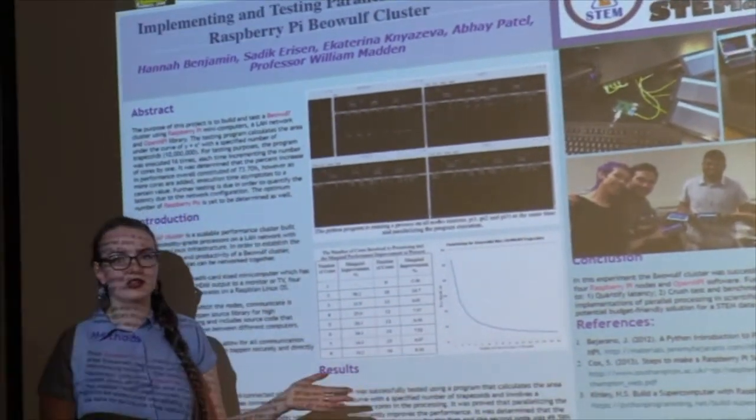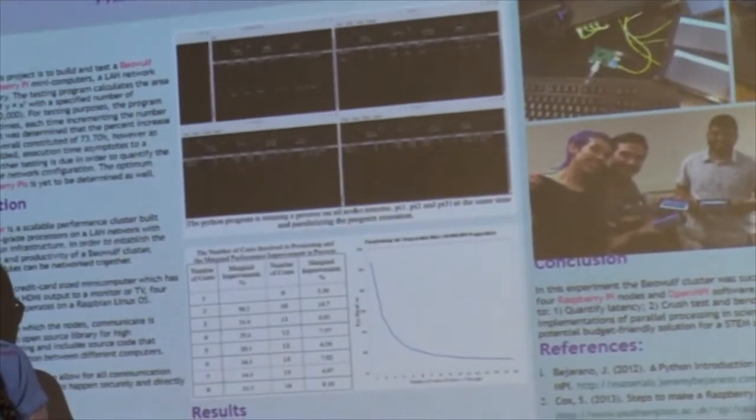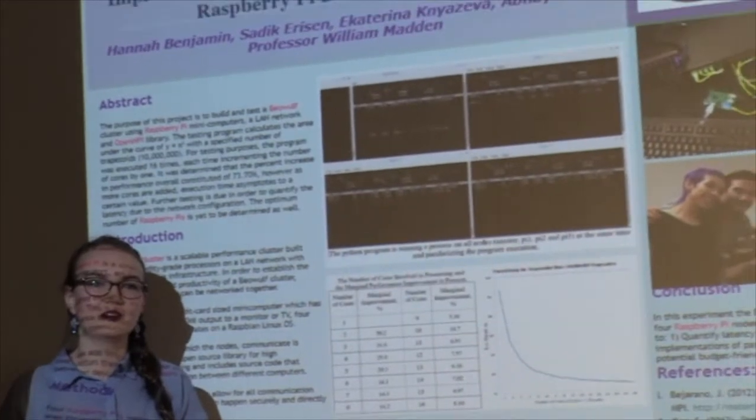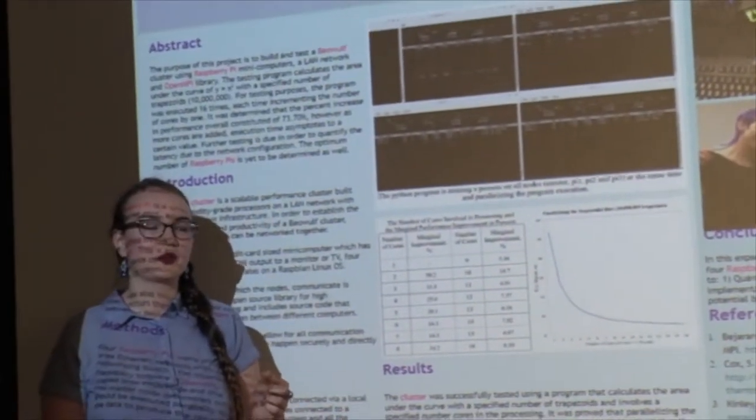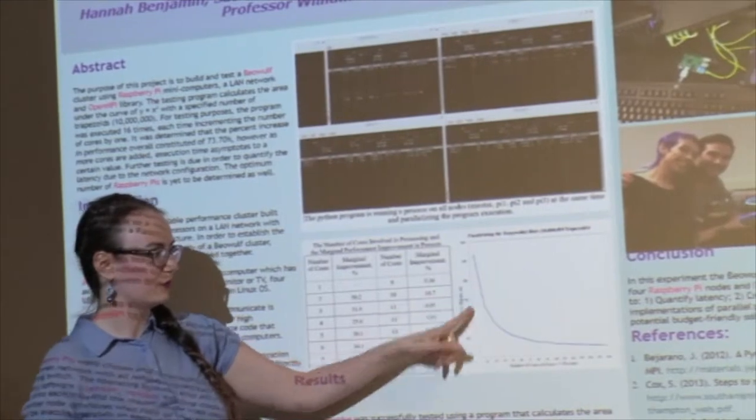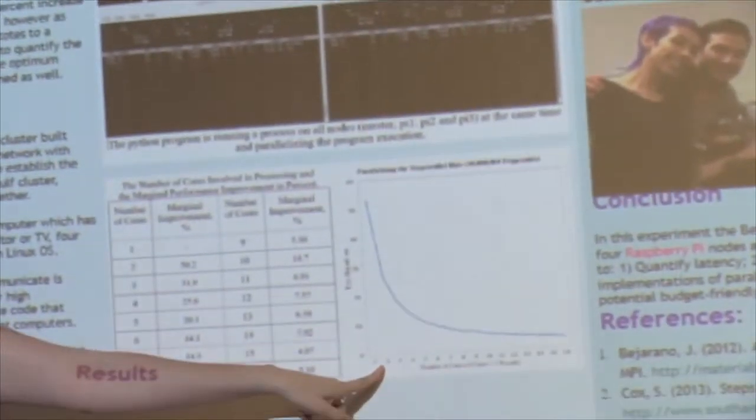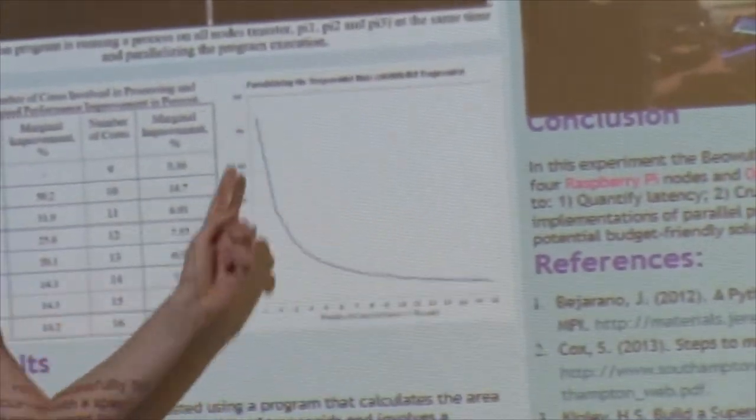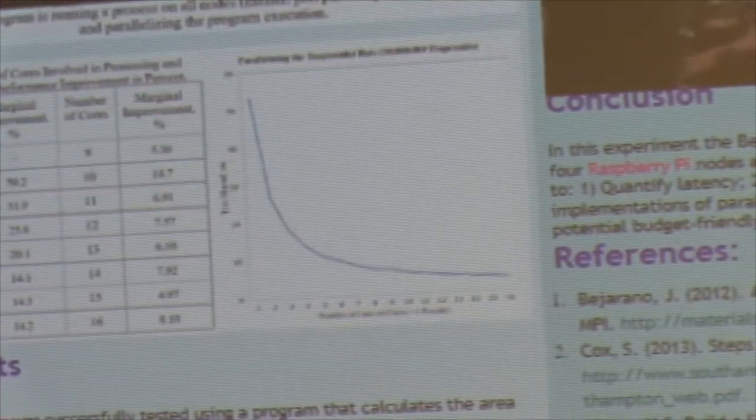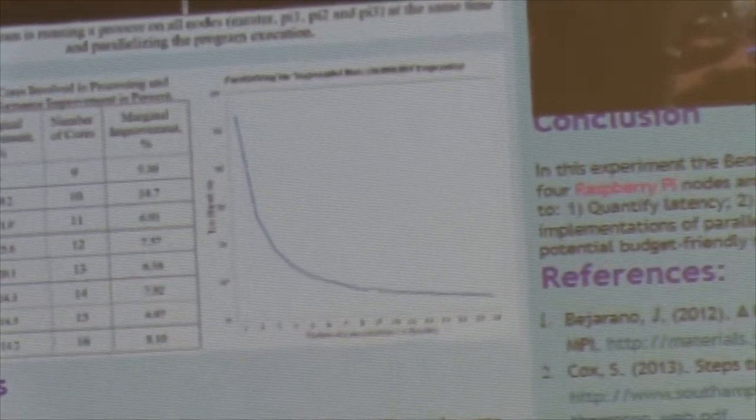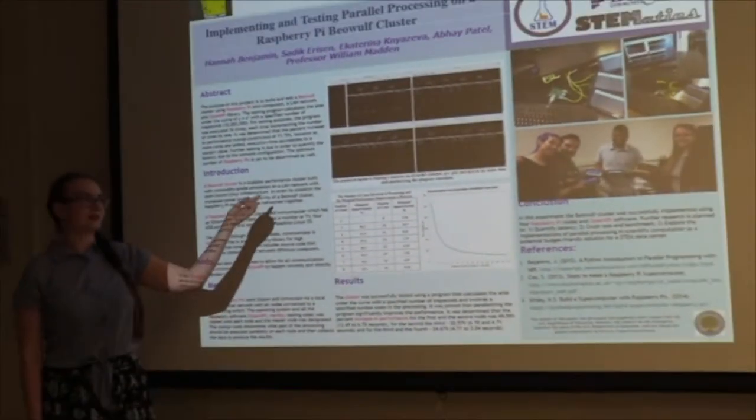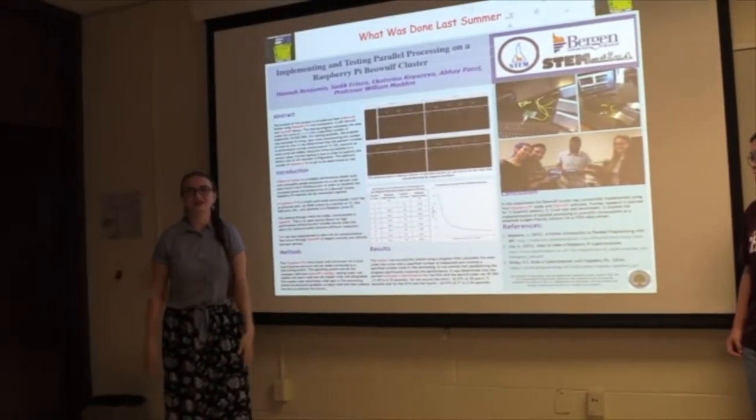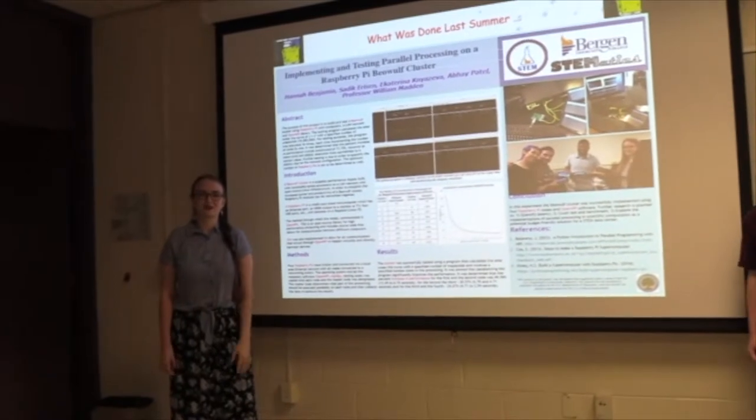So we were running testing software on it. I think we were using some calculus like we did area under the curve of x squared, and we ran it on four Raspberry Pis. As you can see, moving from one core, each Raspberry Pi has four cores, so moving from one core to 16 cores the time decreased greatly, so it proves the efficiency of the system. That was our results, and this was the poster presented at the Stance Square where this project won second place, and it was the only IT computer science project awarded.